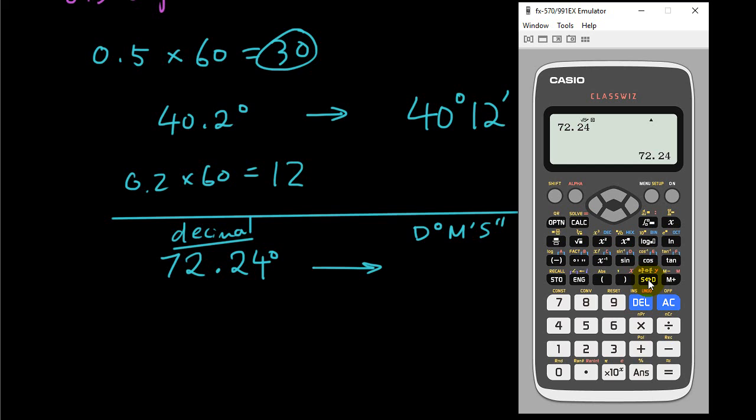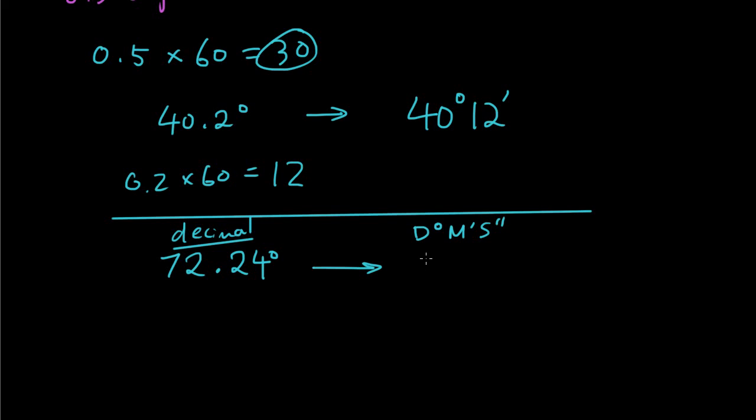And now we want to convert it to degrees, minutes, seconds using this button right here. Degrees, minutes, seconds. Now some calculators might require you to press shift first and then press this, but this is a newer version of the calculator. So if you just press that button, it converts it to 72 degrees, 14 minutes, 24 seconds. So that is the way that I advocate that you guys do it, is just using a calculator. But you do need to understand the theory behind it.